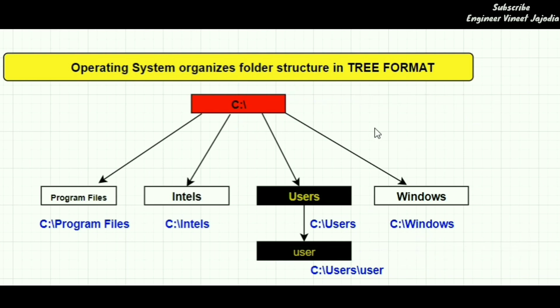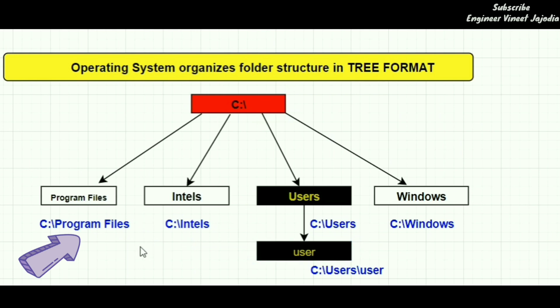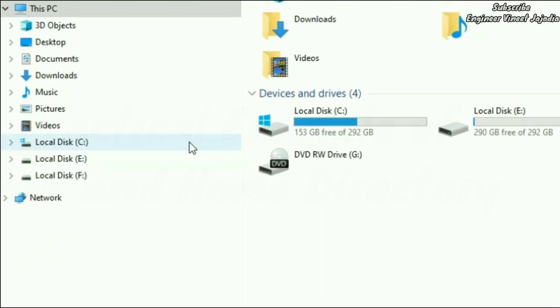In this topic, we have learned: what is root directory — it is the topmost directory; what is the home directory — it is given by the network or Unix operating system for the user to store information; and what are absolute paths — these are paths based upon the root directory so that we can reach a particular directory or file within the root directory.